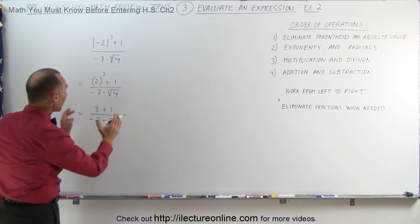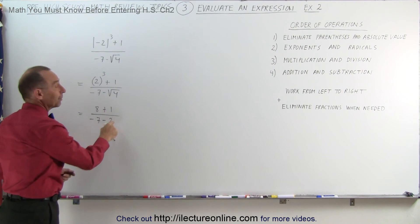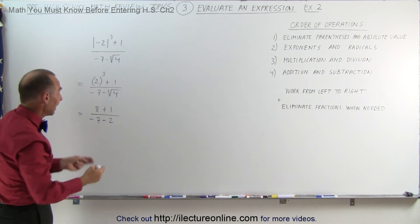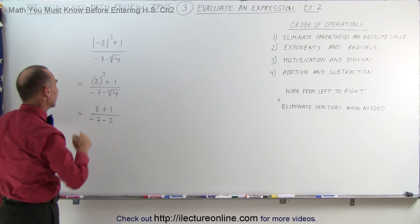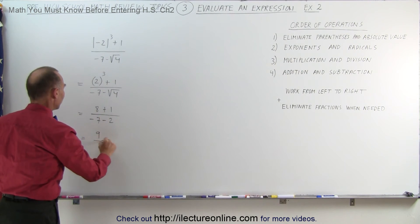Now we can combine what's in the numerator and combine what's in the denominator. Notice it's the numerator divided by the denominator, but before I can do that division, I have to simplify both the numerator and the denominator. So this can now be written as 8 plus 1, which is 9, divided by minus 7 minus 2, which is a minus 9.